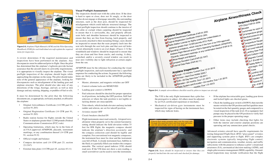Flight instruments must be checked. The VSI is the only flight instrument that a pilot has the prerogative to adjust; all others must be adjusted by an FAA-certificated repairman or mechanic. Mechanical air-driven gyro instruments must be inspected for signs of hazing on the instrument face, which may indicate leaks. Seats should be inspected to ensure that they properly latch into the seat rails through the seat lock pins and that seat rail holes are not abnormally worn to an oval shape.